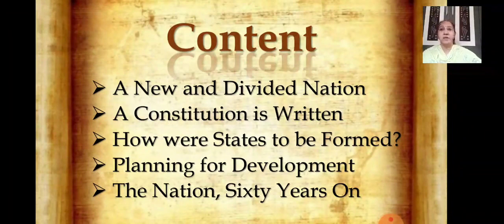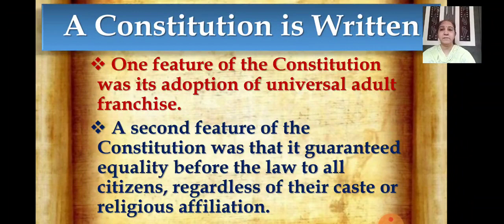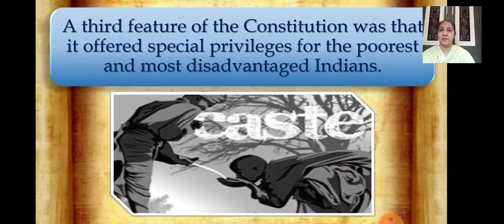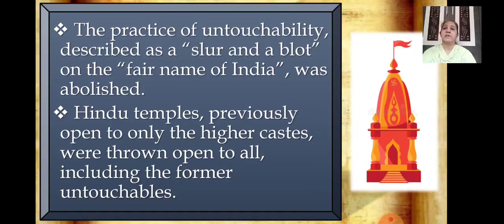In this video lesson, you will be learning about the next third feature of the constitution. These two features we have already seen in our last live lecture. Moving to the next one: a third feature of the constitution was that it offered special privileges for the poorest and the most disadvantaged Indians. Here we are talking about the practice of untouchability. The practice of untouchability was described as a slur and a blot on the fair name of India, so that was abolished.